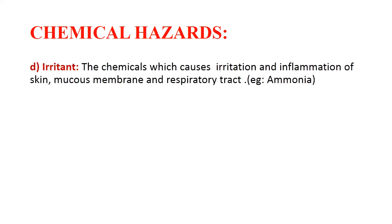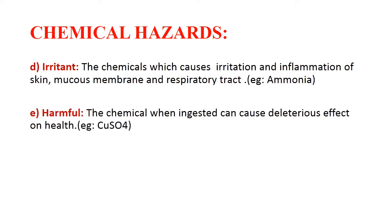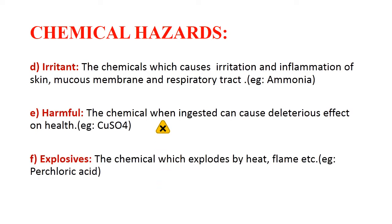Other types of chemical hazard include irritant — a chemical that causes irritation and inflammation of the skin, mucous membrane, and respiratory tract mucosa if inhaled; example: ammonia vapor. Harmful — a chemical that when ingested can cause deleterious effects on health; example: copper sulfate or blue vitriol. This is the logo for harmful substances.